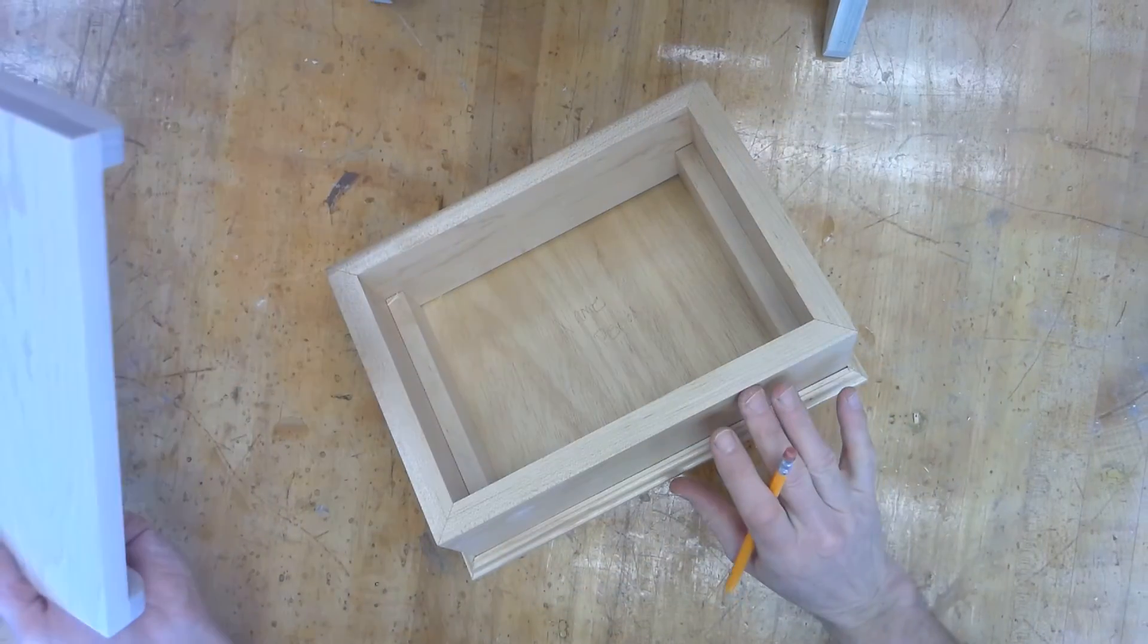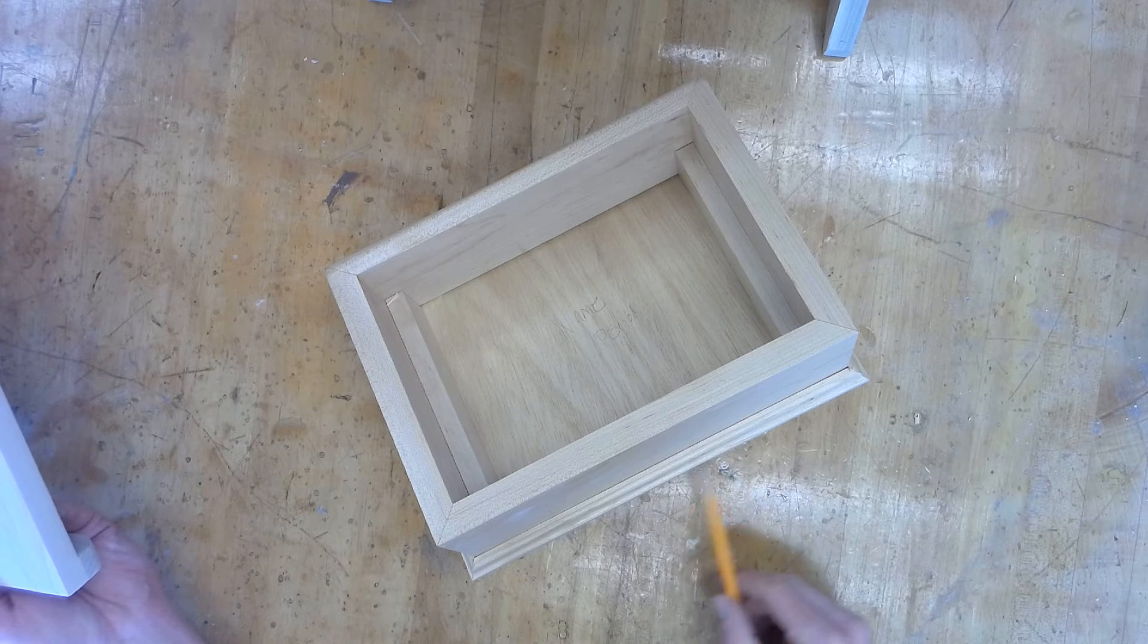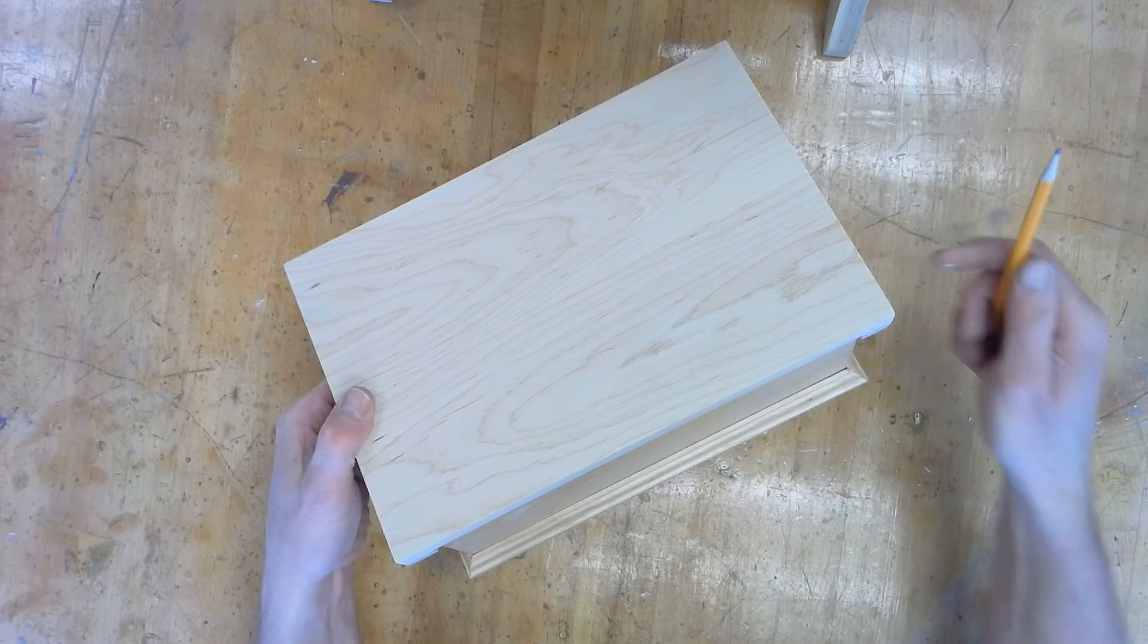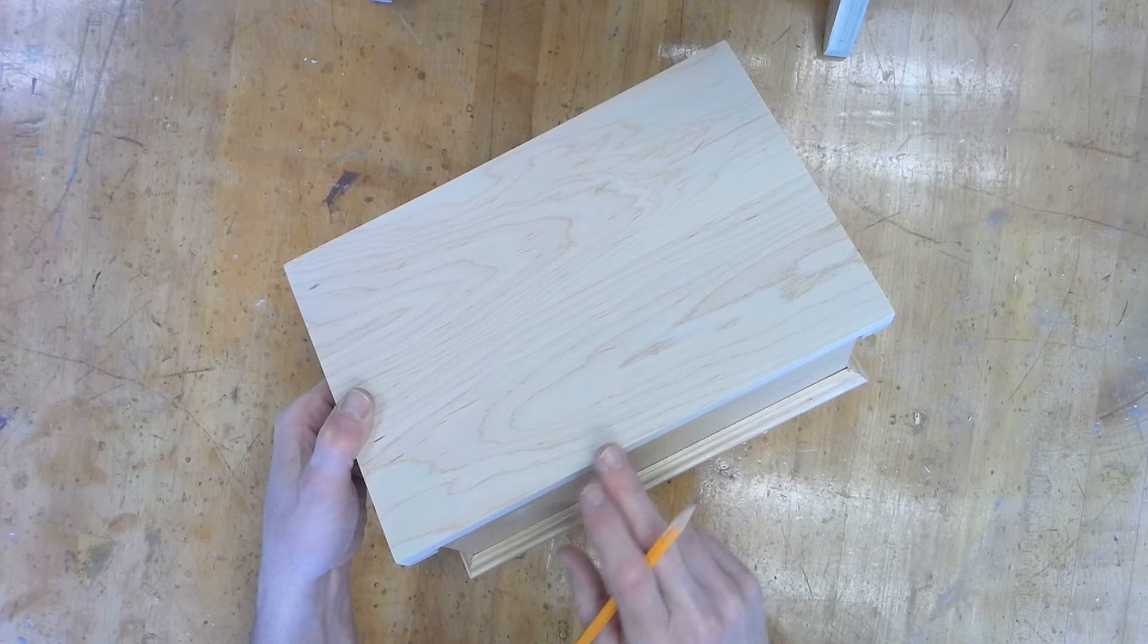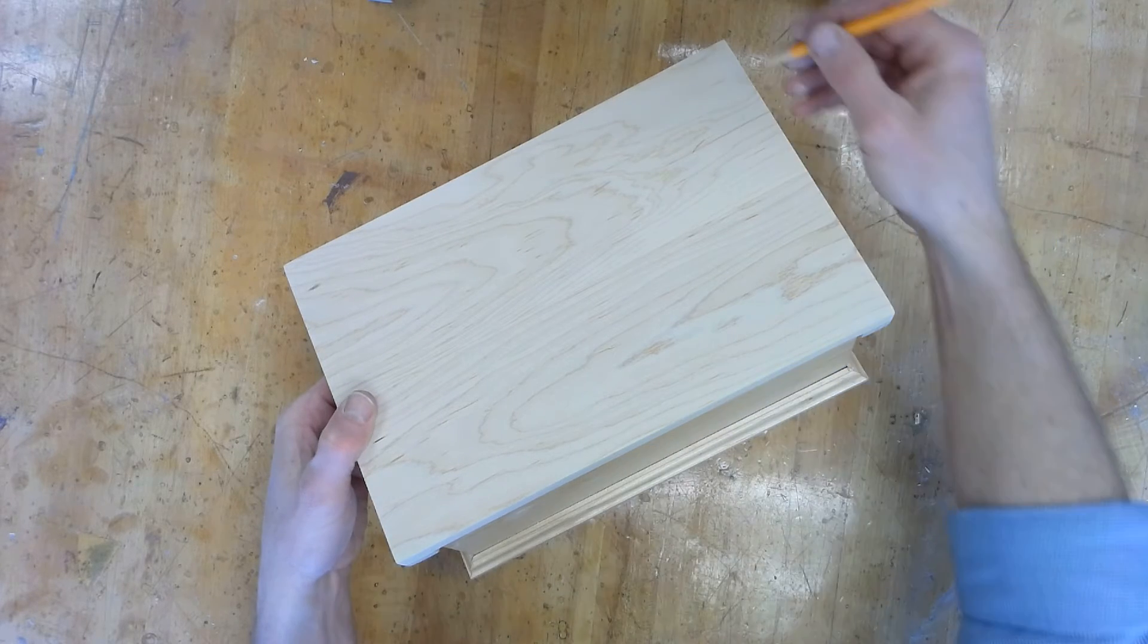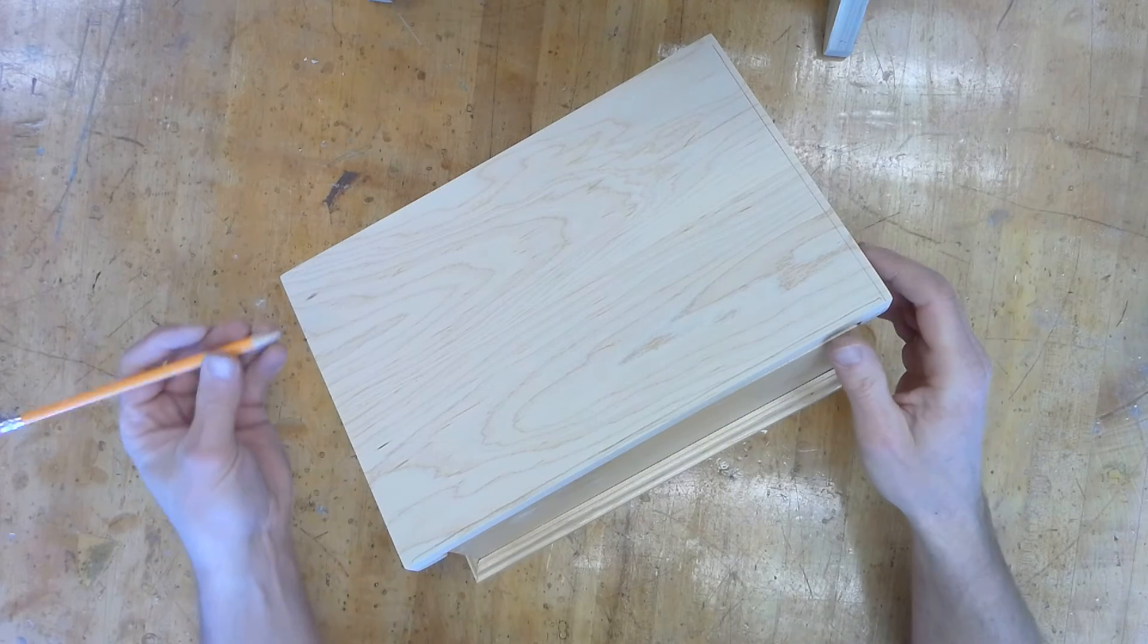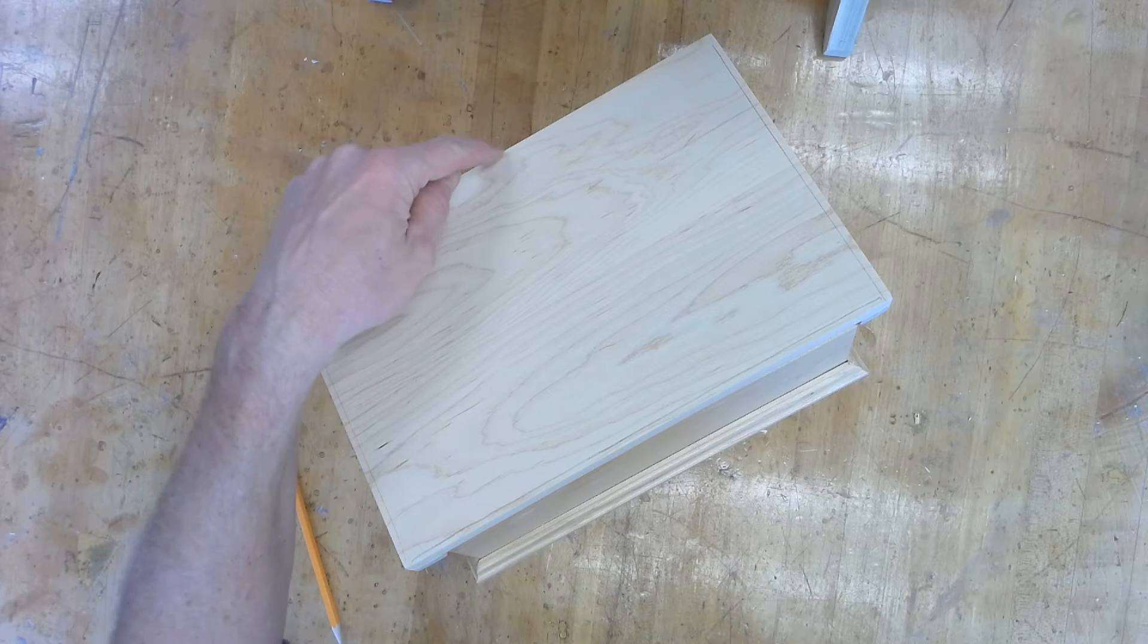So I've got my box sitting here. Remember we put trim, we've got this OG trim in the front, the left, and the right. When we put our top on, we want to match the profile, the OG profile, down to here. So we're going to router the end, the front edge, and the other end.